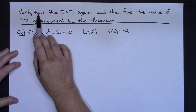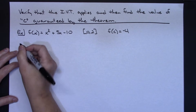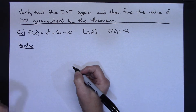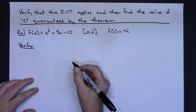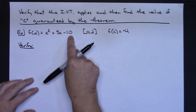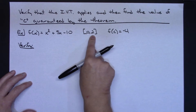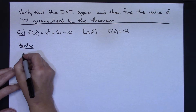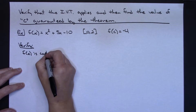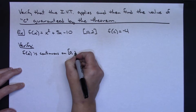The first part is to verify that the Intermediate Value Theorem applies. The theorem requires that F of X be continuous on the closed interval. This function is a polynomial curve, and as you should remember, all polynomial curves are smooth and continuous — and definitely smooth and continuous on this interval. So I need to write down: F of X is continuous on the closed interval from 0 to 2.